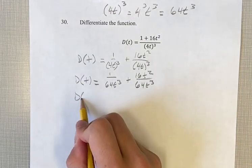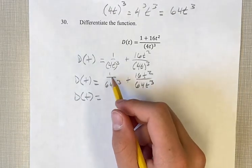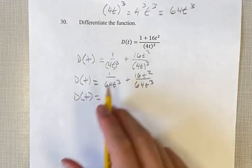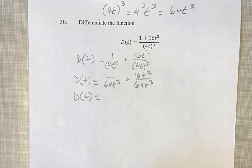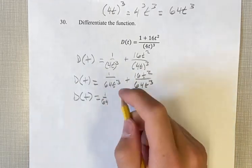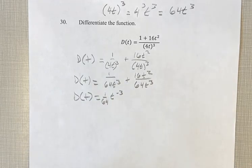Now, we're going to get this into the form of a power function. Here, we have an exponent in the denominator. If we want to bring that into the numerator, we multiply that exponent by negative 1. So our coefficient is 1 over 64, and we're multiplying by t to the negative 3.